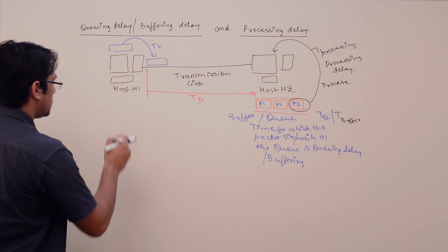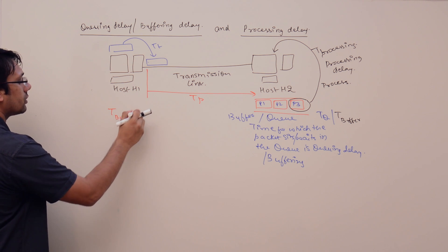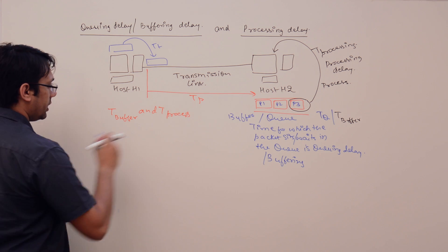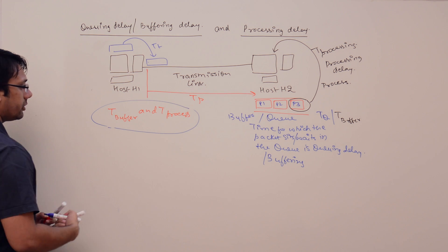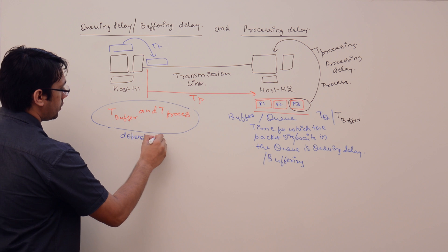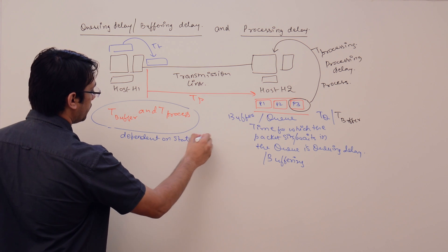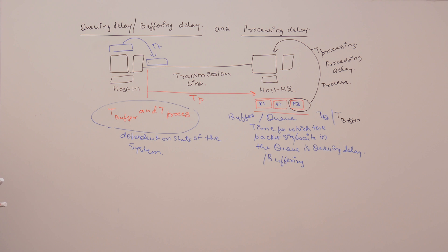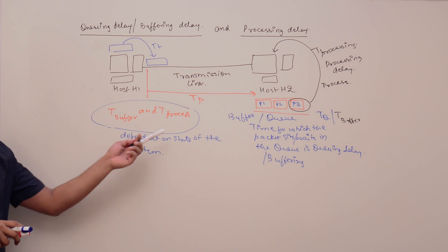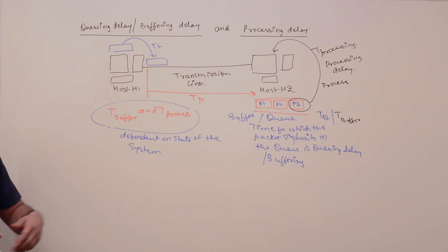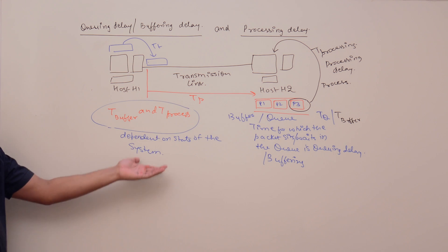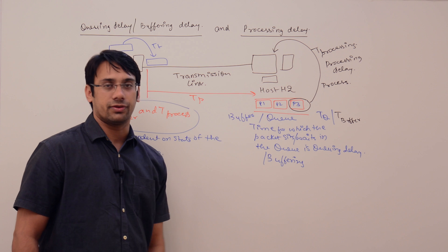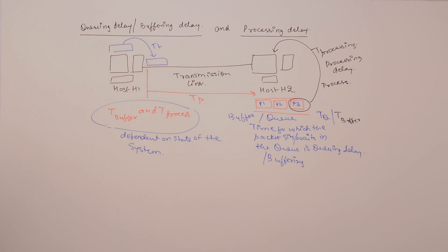Both T_buffer and T_processing are dependent on the state of the system. If the host is already doing heavy processing, these delays will obviously increase. If the host is completely free to process packets immediately, then they will be very small. So we cannot actually predict what the processing delay and buffering delay will be, because they depend on the system state which may change throughout the process.